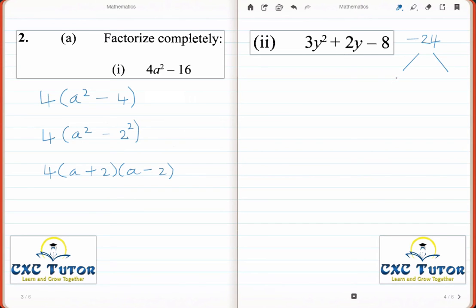The two numbers that come to mind are minus 4 and 6. With these two values in mind, I will rewrite the expression now as 3y squared plus 6y minus 4y minus 8. On the new line now, we factorize out the following variables.